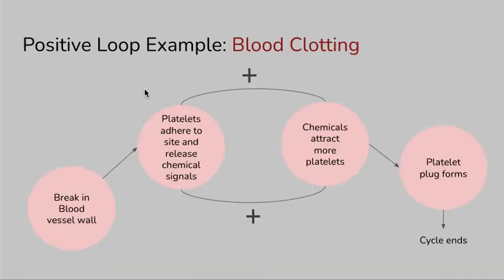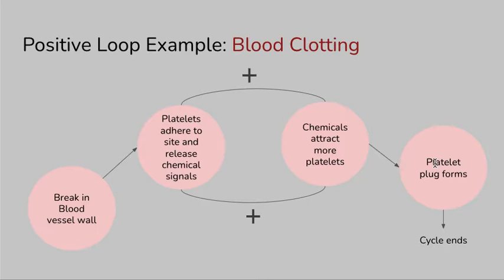A positive feedback loop related to blood clotting works in a different way. If we have a break in a blood vessel wall from a cut or a laceration, platelets adhere to the site and start to release chemical signals. Those chemicals attract more platelets, which adhere to the site and release more chemical signals. This continues to amplify the signal, and more and more platelets will come until finally a platelet plug is formed at the site of the break. Then the cycle ends because we don't need any more platelets. Similarly with childbirth — once the child is delivered, the contractions don't need to amplify because the goal has been achieved. This entire process goes away from homeostasis.